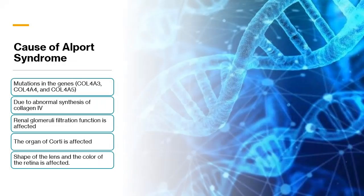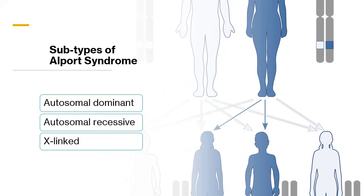Collagen IV alpha-3, alpha-4, and alpha-5 are affected in this syndrome. These genes play an important role in the renal glomeruli filtration function. Type 4 collagen is also an important component of the cochlear part, specifically the organ of Corti, the receptor organ of sound waves. This protein is also important for the normal shape of the lens and the normal color of the retina.